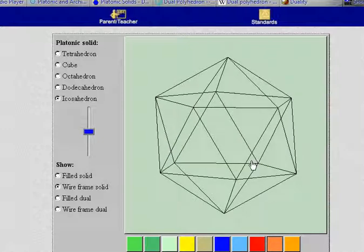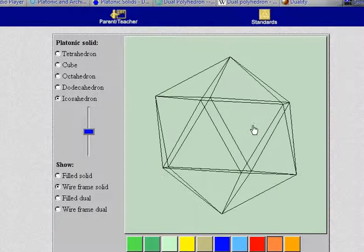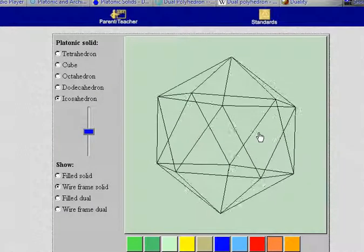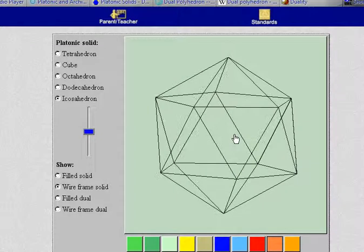What I'm going to be doing now is forming the dual of the icosahedron. To form a dual we take the midpoint of each face. So each of these triangular faces, imagine a midpoint there. And then whenever two faces are adjacent we connect those midpoints.